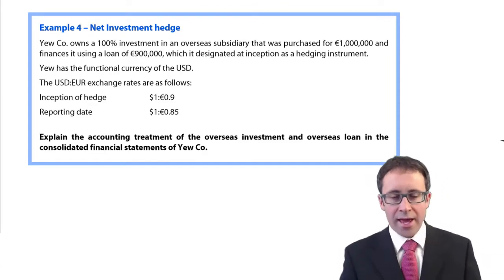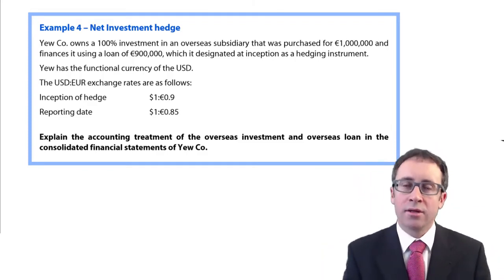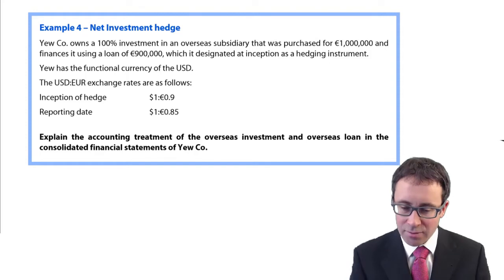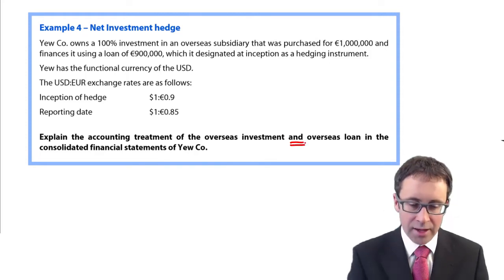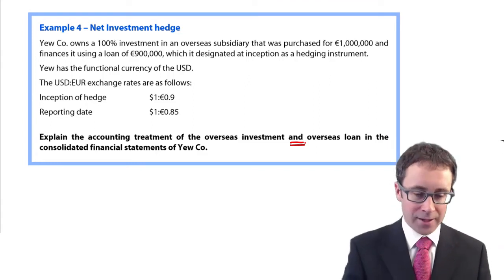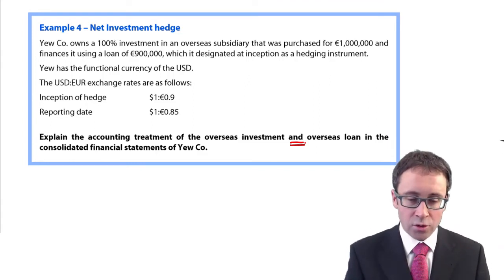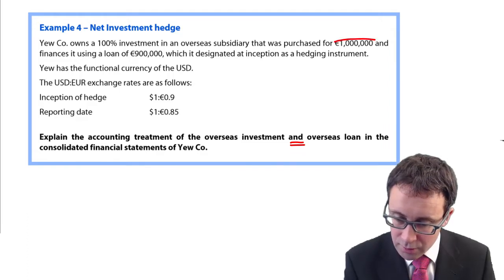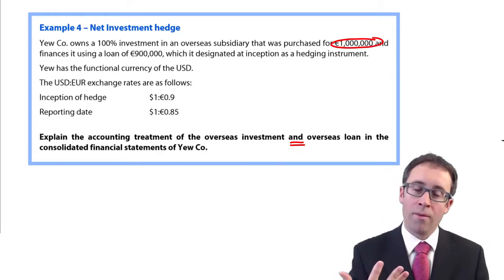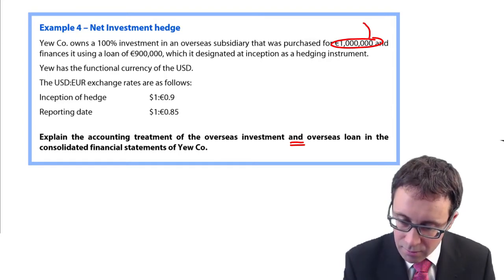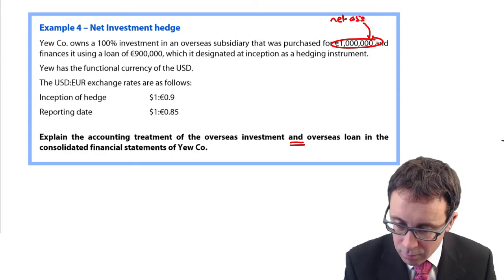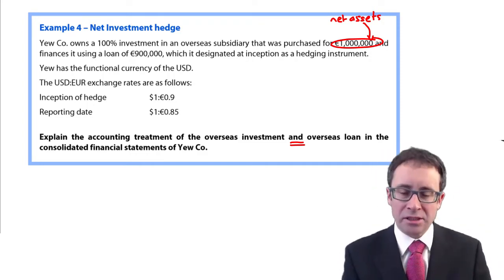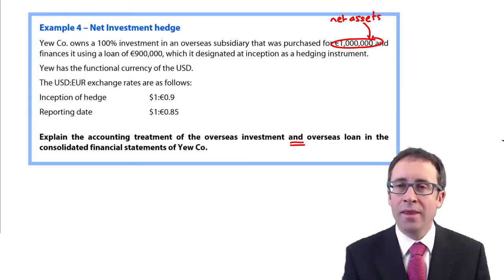Let's explain the accounting treatment again. You own 100% of an overseas subsidiary purchased for one million euros. For simplicity, let's say there's no goodwill — we've paid one million and the net assets are one million.